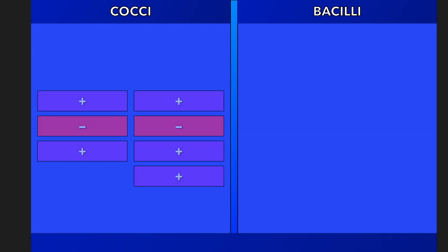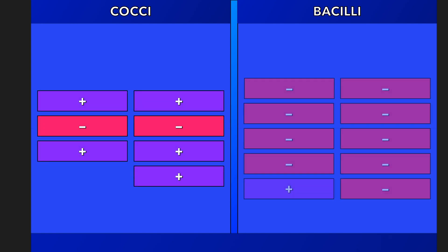For each generation, we will display several important organisms that may or may not be susceptible to that group of cephalosporins. Cocci will be found on the left, while bacilli will be on the right. Organisms in purple boxes are gram-positives, while the gram-negatives are in the pinkish boxes.